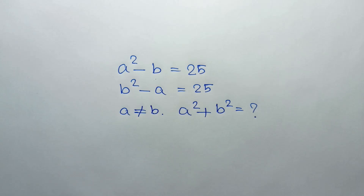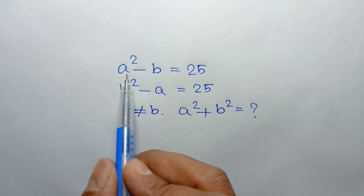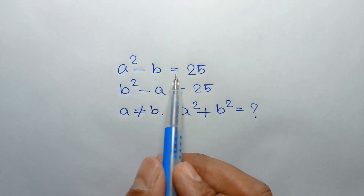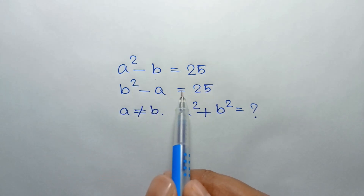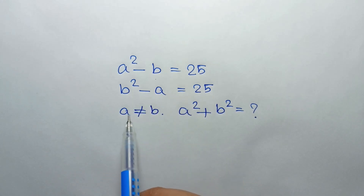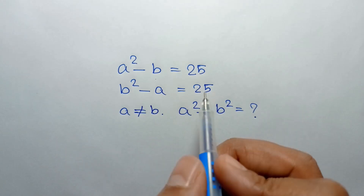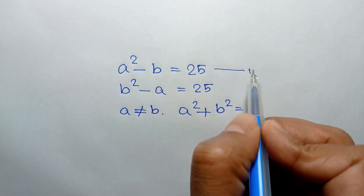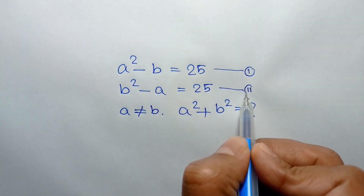Hi everyone. In this video I am going to show how to find the value of A squared plus B squared, where A squared minus B is equal to 25, B squared minus A is equal to 25, and A is not equal to B. Let's call these equation number 1 and equation number 2.